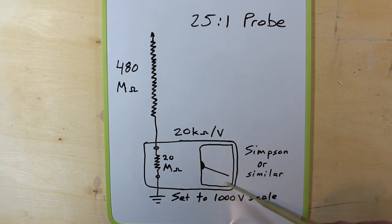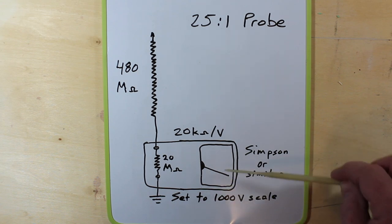That scale actually has a 250 on it, so we can actually use that number for 25,000 volts. We'll use the 200 as 20,000 volts, etc.